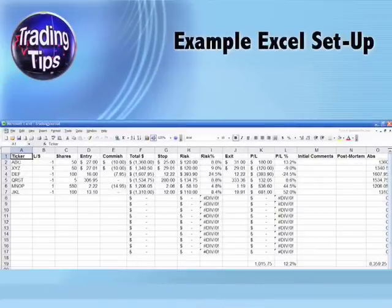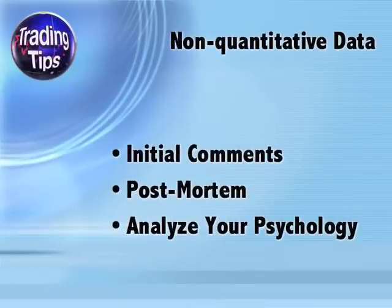Let's look at an example. Notice how the formulas correctly tabulate profit/loss and profit/loss percentage regardless of whether the stock is long or short, based on the negative one or one values in column B. Also take note of column O and how the profit/loss percentage is tabulated in cell L19.